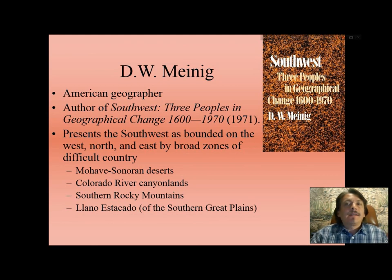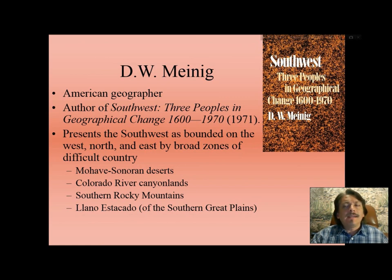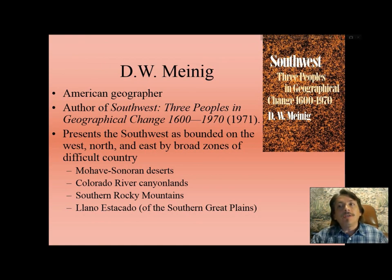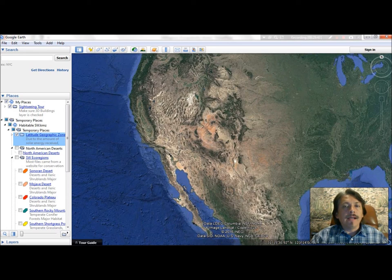Meinig asks the questions about why the Southwest came to be an identifiable geographic region. He's among several scholars, but rather groundbreaking because he presents the Southwest as a region bounded on the west, the north, and the east by broad zones of difficult country. I'd like to take you on a journey using Google Earth to illustrate what he identifies.